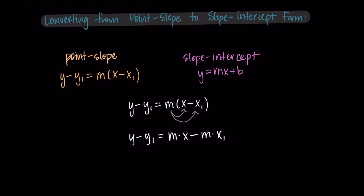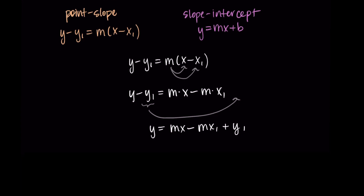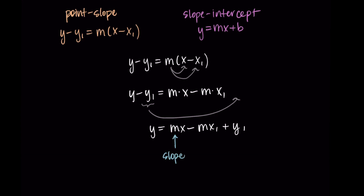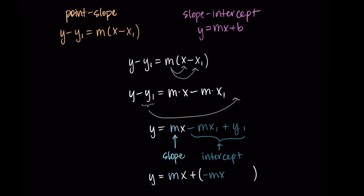So I have y minus y1 is equal to m times x minus m times x1. Since y equals mx plus b has y by itself, I want to isolate y by adding y1 to the right-hand side. So now I have y equals mx minus mx1 plus y1. Here, m is the slope, and everything left over — negative mx1 plus y1 — is our vertical intercept, our b value. So this is the slope mx plus the intercept b, which is negative mx1 plus y1.